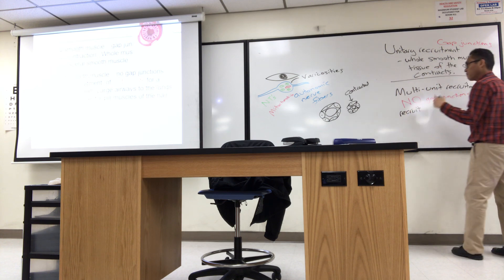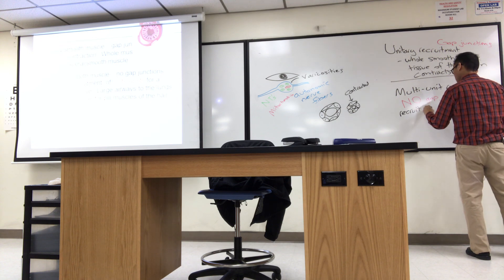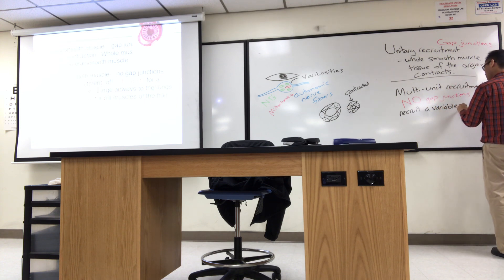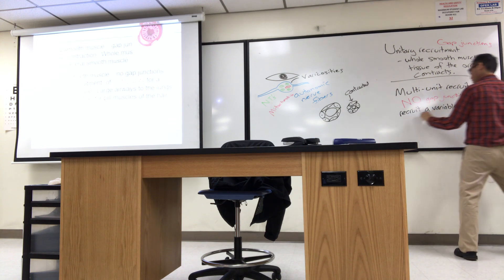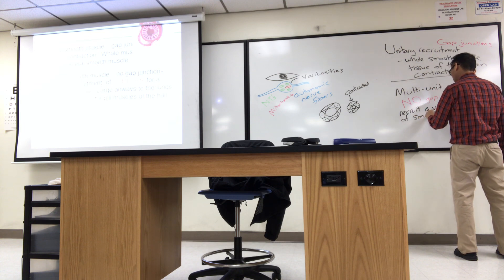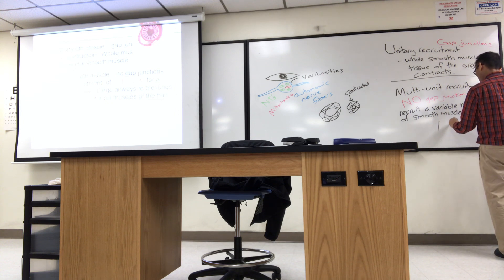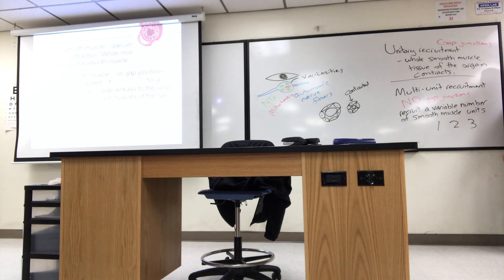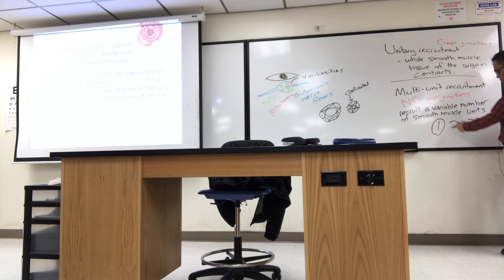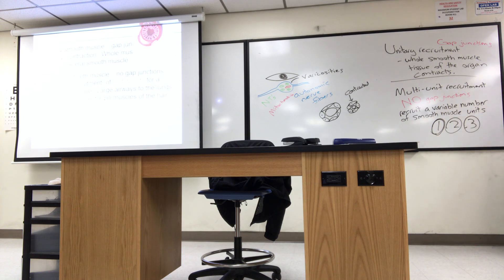You recruit a variable number of smooth muscle sets. If you want a mild response, have enough neurotransmitter to make one fire. For a stronger response, secrete more to get two. For the strongest response, recruit all three — that's what graded means: low, medium, high. So instead of all-or-none, you grade the response.